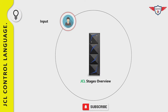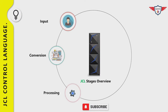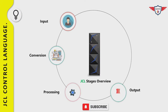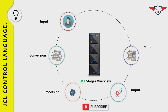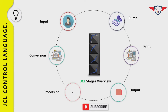Generally speaking, a job goes through six different stages. The first is input, second is conversion, third is processing, fourth is output, fifth is print, and the last one is purge.